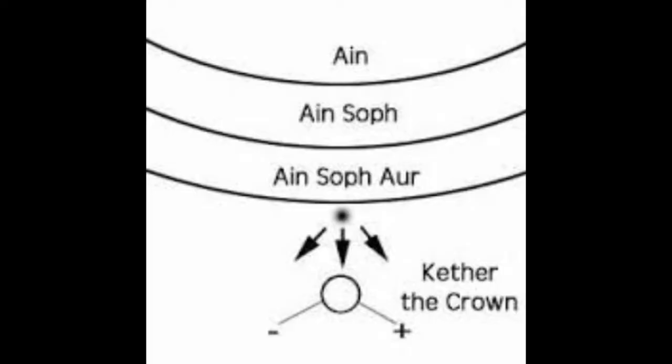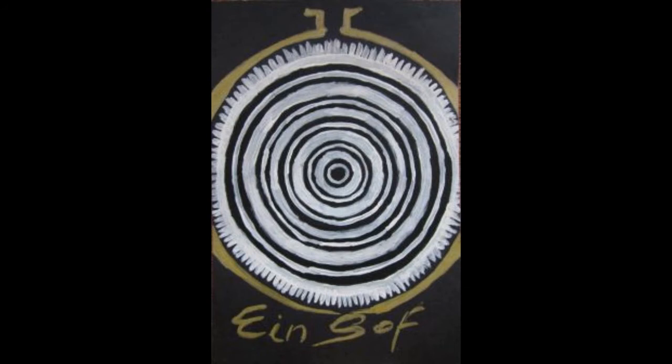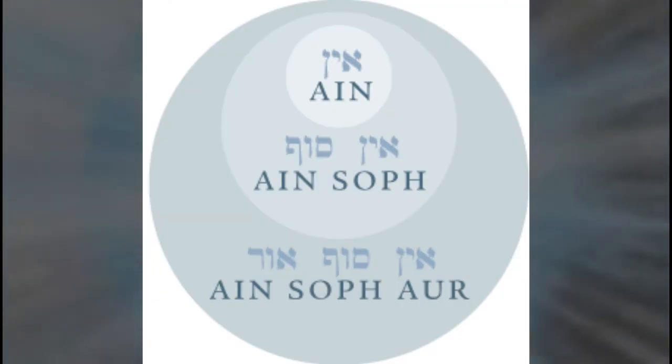There are three layers of negative existence. The first is Ein, or Nothingness — basically a negative article meaning nothing. Ein Sof means 'no limit,' limitlessness, infinity. And then Ein Sof Aur, where 'Aur' means light — so infinite light. You get: nothing, no limit, unlimited light.